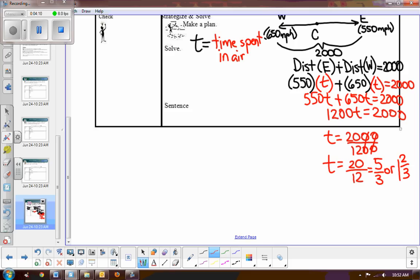Now what does that represent? That's the time spent in the air. So it would be 1 hour. And then we have to convert 2 thirds into minutes. Well, 2 thirds will convert to how many minutes out of 60? So multiply by 20. So that would be 40 minutes. So 1 hour and 40 minutes.